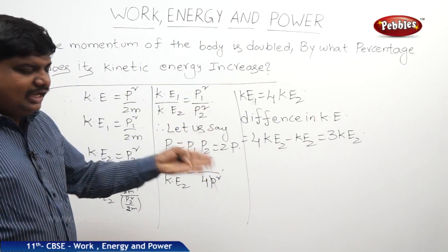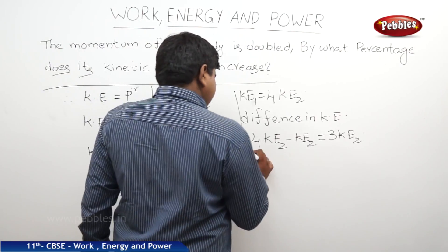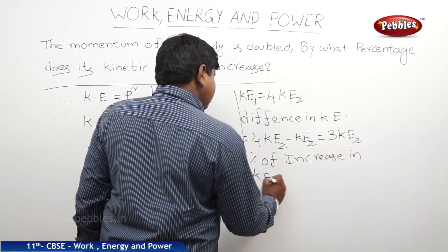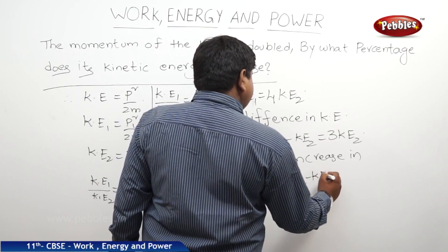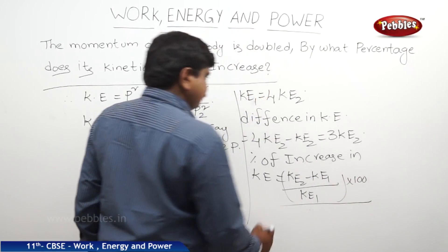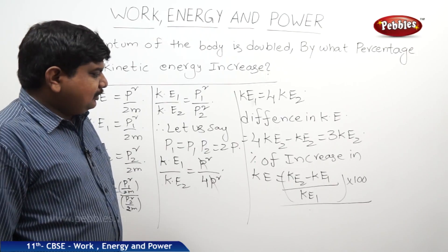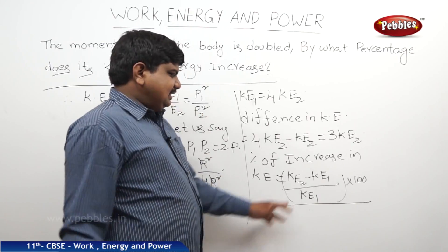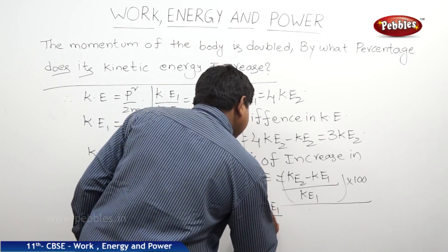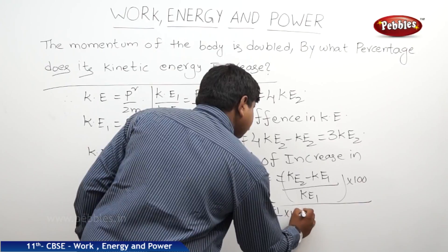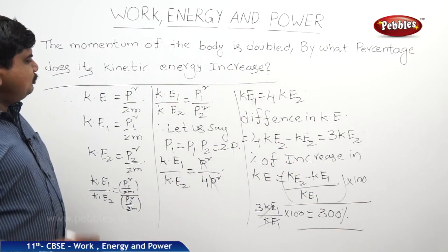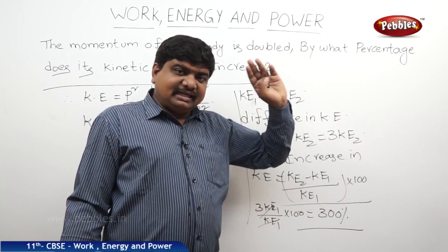The percentage increase in KE is equal to (KE2 minus KE1) by KE1 into 100, which gives 3·KE1 by KE1 into 100, equal to 300 percent. So if the momentum is doubled, the kinetic energy increases by 300 percent.